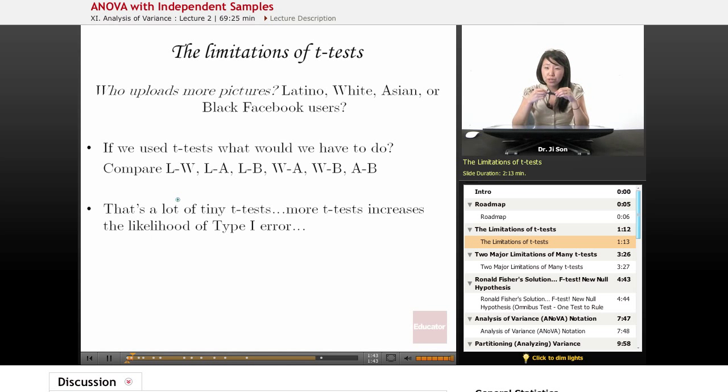Well, let's see what would happen if we used independent samples t-tests. What would we have to do? We'd have to compare Latinos to whites, Latinos to Asians, Latinos to blacks, and then whites to Asians, and whites to blacks, and Asians to blacks. And it's like, whoa, all of a sudden we have to do six different independent samples t-tests.